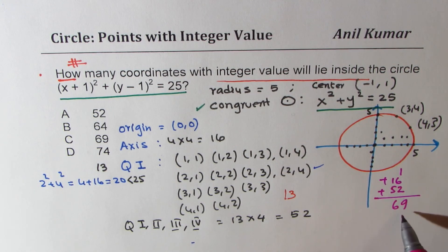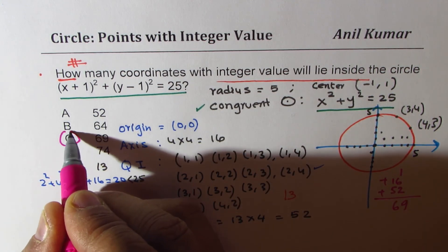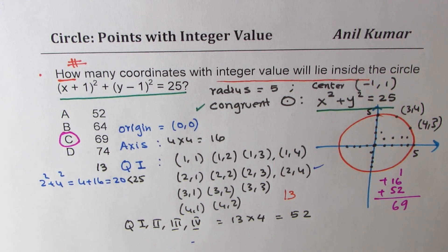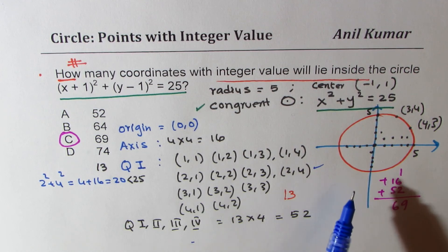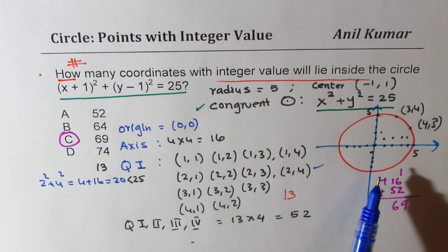So that gives you 69 is the answer. So that is how you get your solution. So that is how you could actually get very easily number of points inside a circle for the given radius. Now this strategy could be extended to any circle anywhere. I hope that helps.